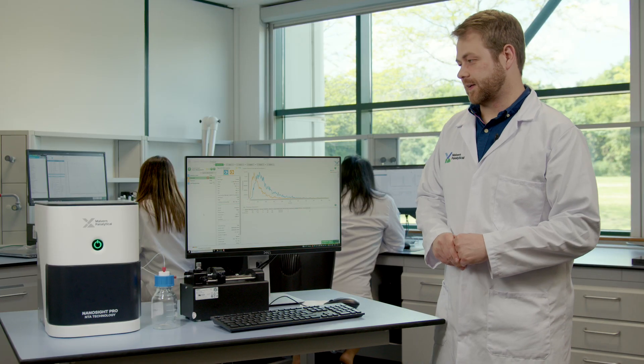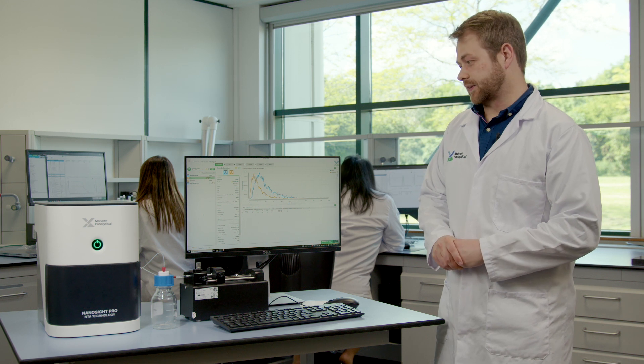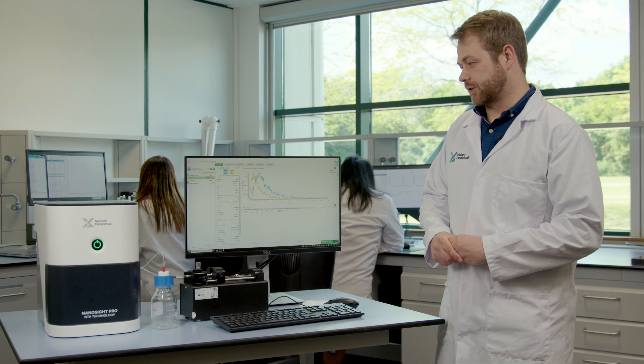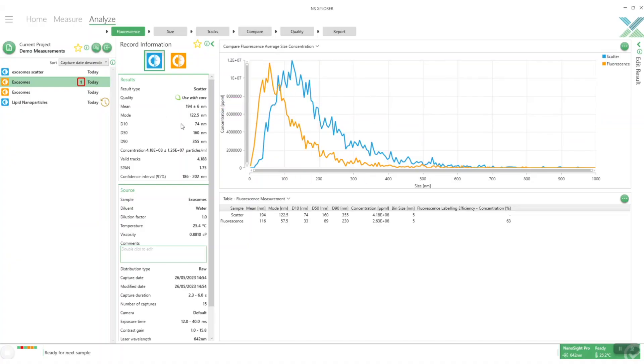Once our measurement is finished processing in the analyze page we can quickly see what our results are. Here we've got our exosome measurement we did earlier and we've got an overlay of the two results, the scatter part and the fluorescence part and you can compare those two distributions straight away. We've also got a fluorescence efficiency value which gives you a good idea of the ratio between those two measurements. We can also look at other things separately so what the size values are such as the mode and mean for each one.